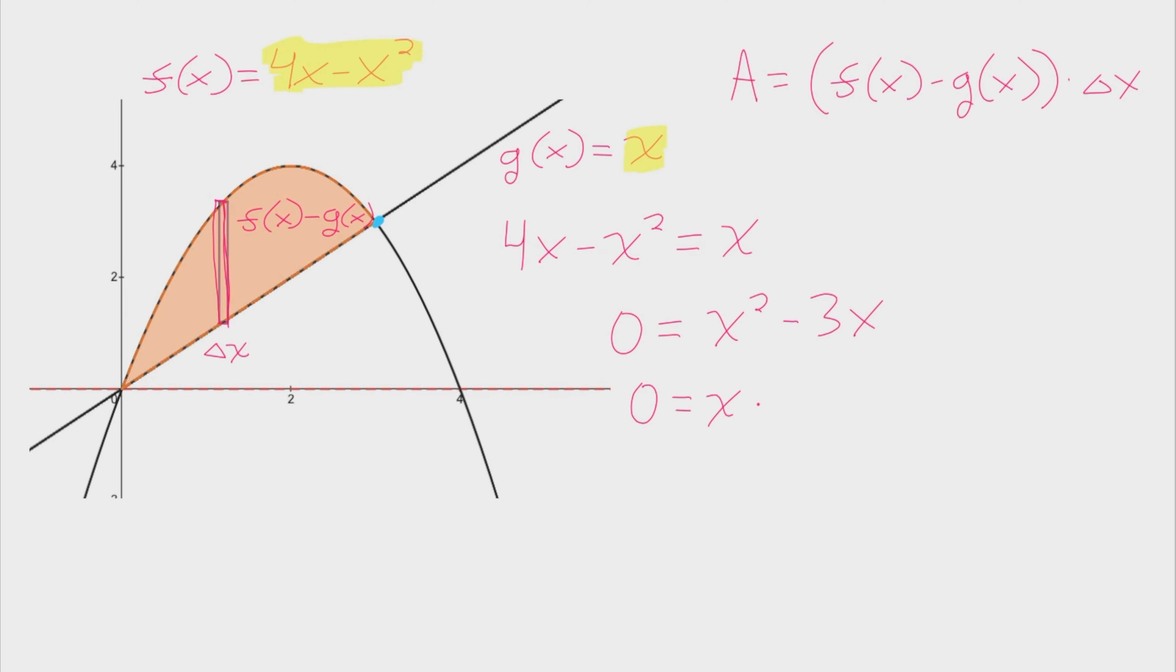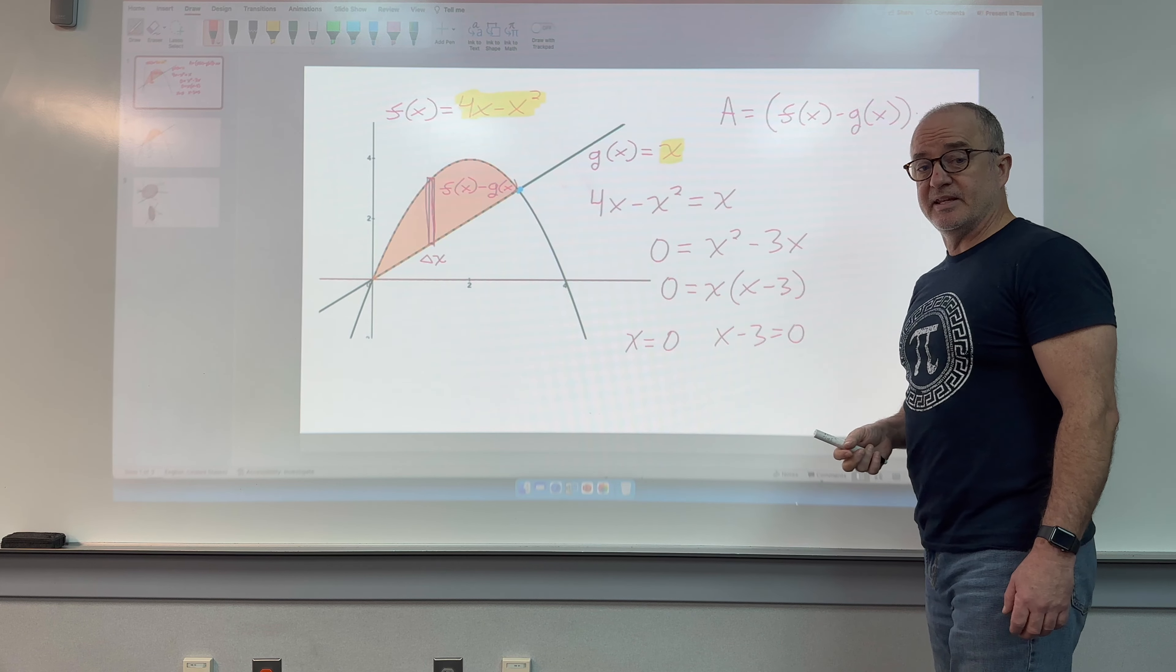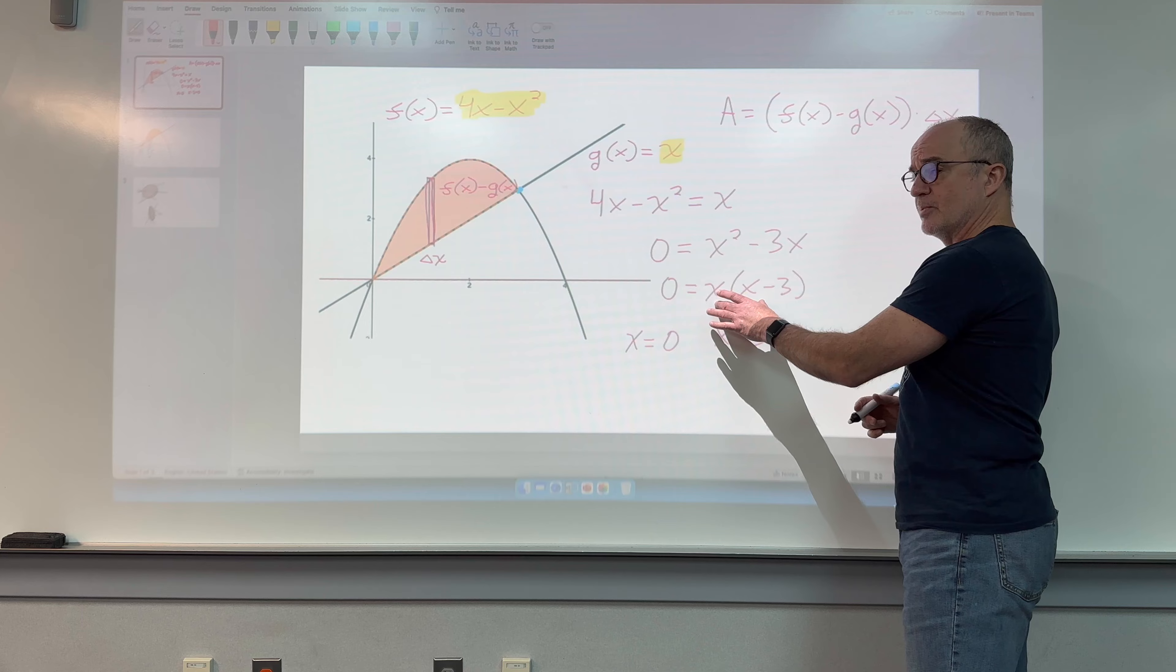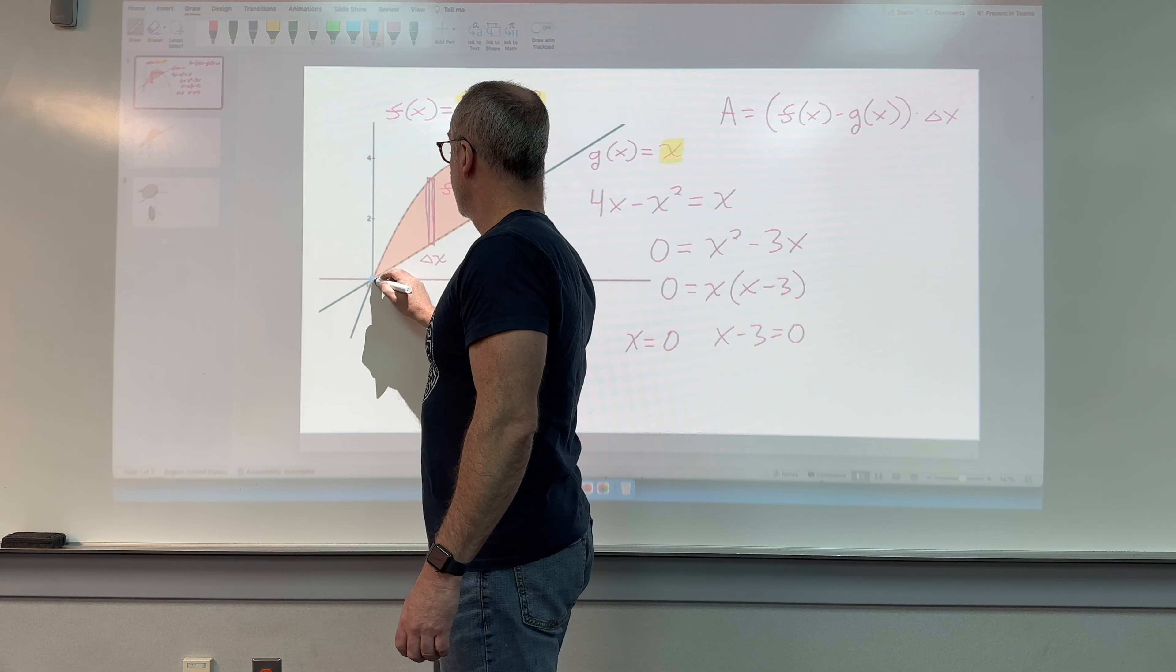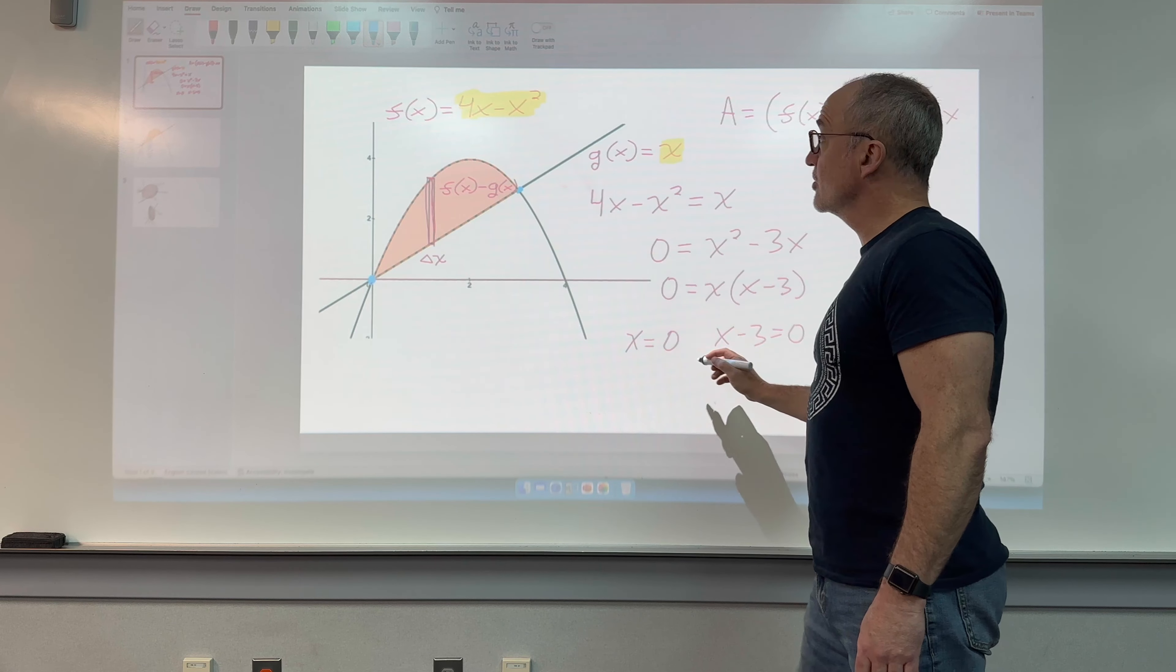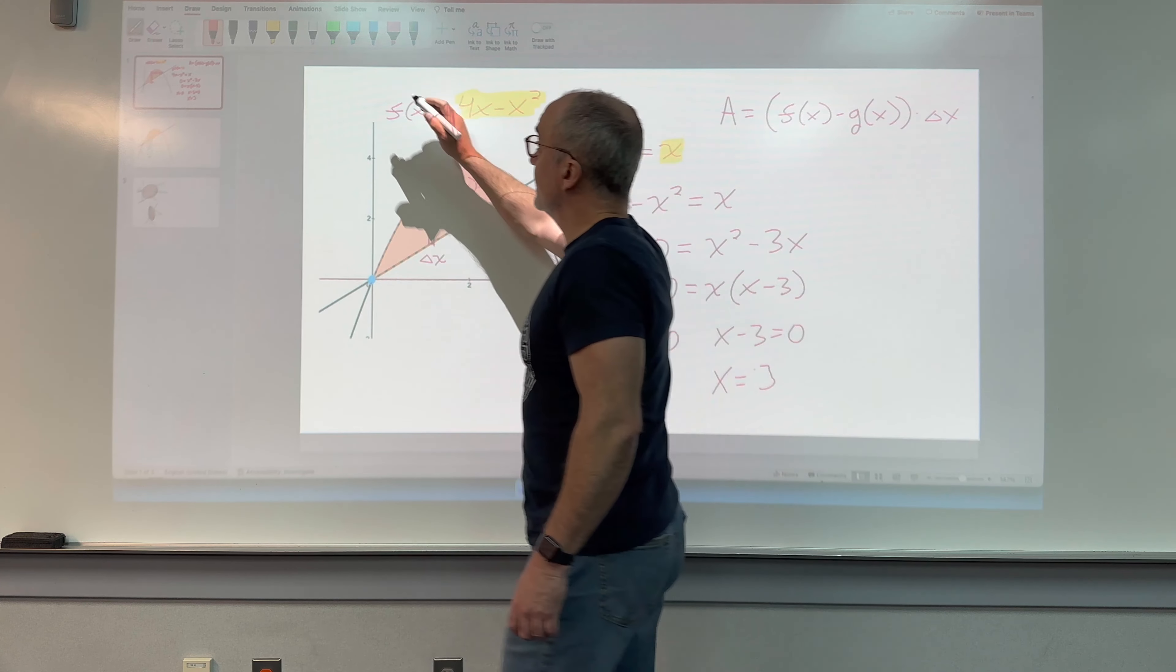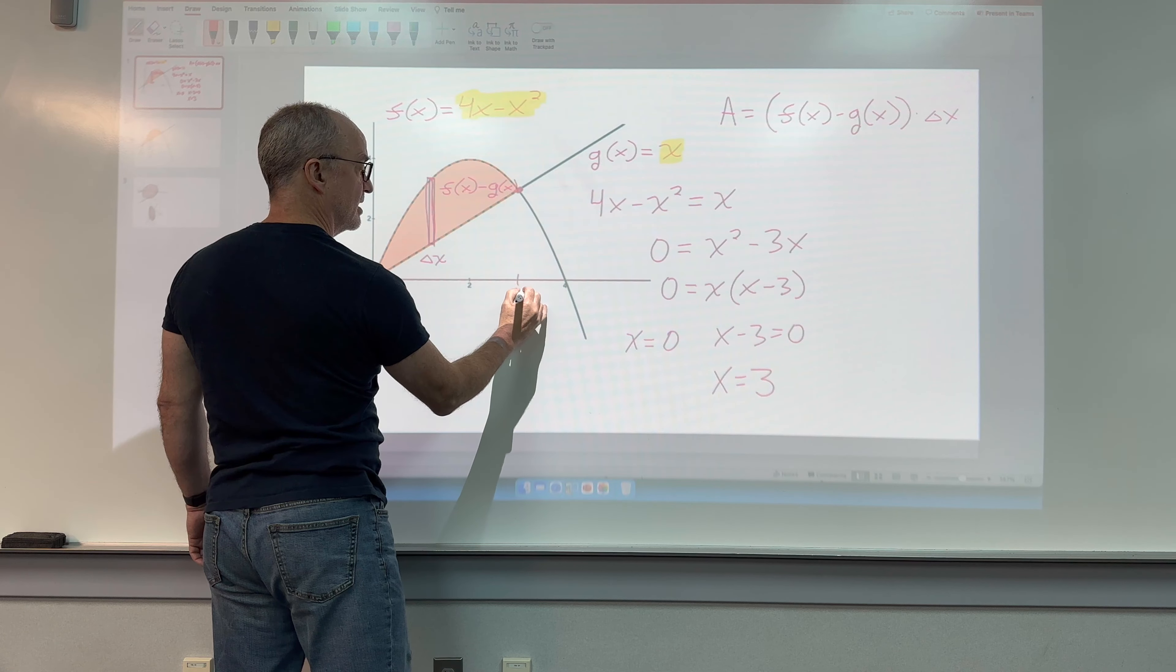I'm going to solve for my multiple solutions here by factoring an x out of each term, and then I'm going to set each factor equal to 0. That's got a fancy name, special property of 0. This gives me x equals 0. That's this x coordinate where they meet. The other solution is x equals 3, which looks about right, halfway between 2 and 4.